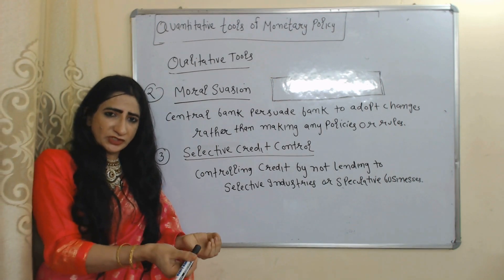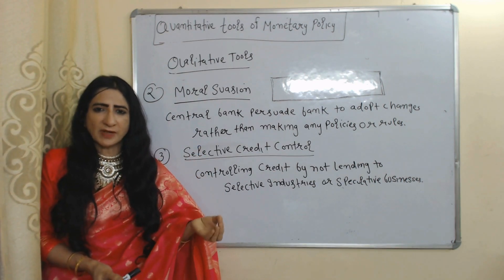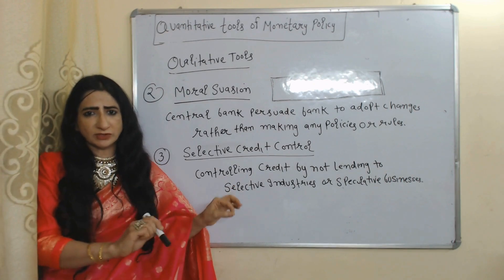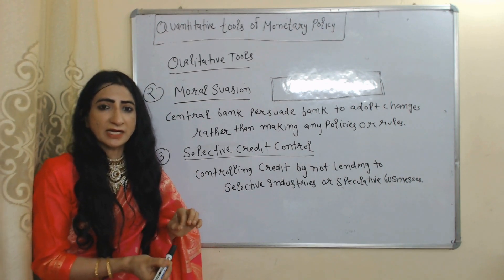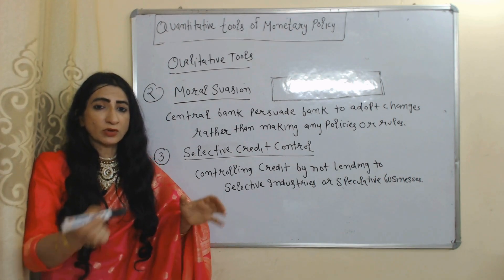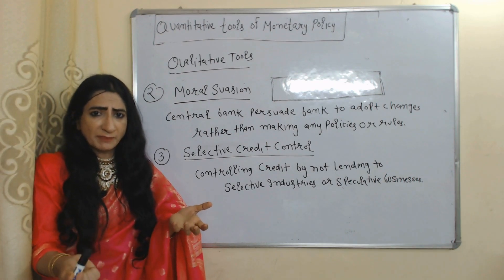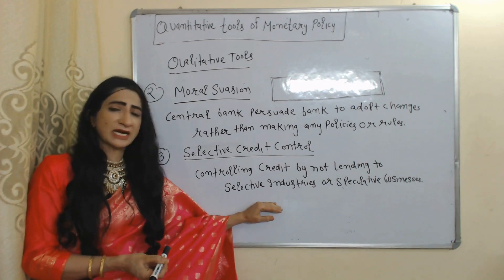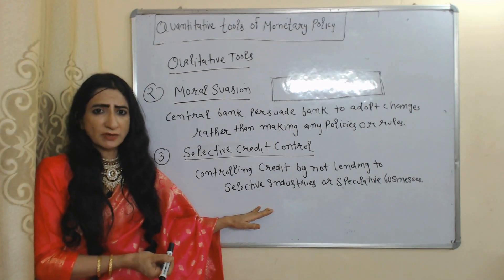The next qualitative tool is moral suasion — under moral suasion, the central bank simply tries to persuade commercial banks to adopt changes rather than imposing any rules and regulations. For example, the central bank meets with commercial banks and explains the economic condition: there is already too much inflation and more money in the economy, so they should not give loans to too many people.